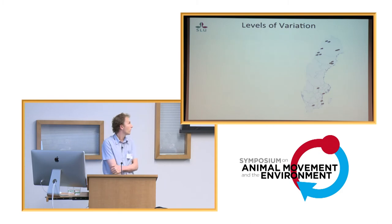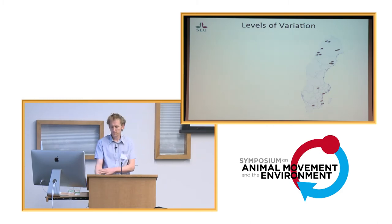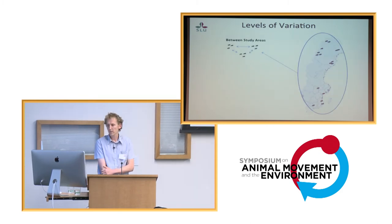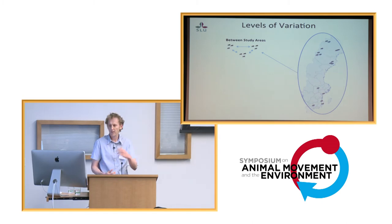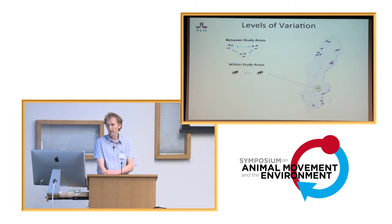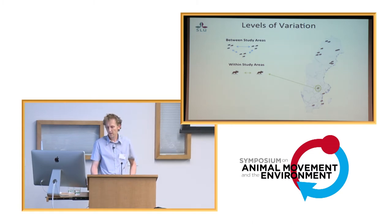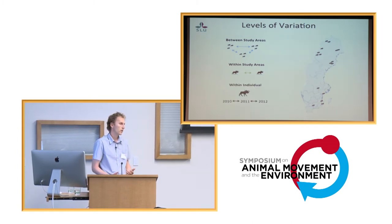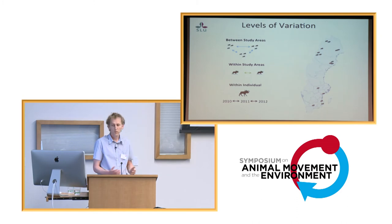We looked at three levels of variation. The first is between study areas — how does one study area vary compared to another. Then within study areas — between individuals in the same study area. And finally, variation within an individual between years.